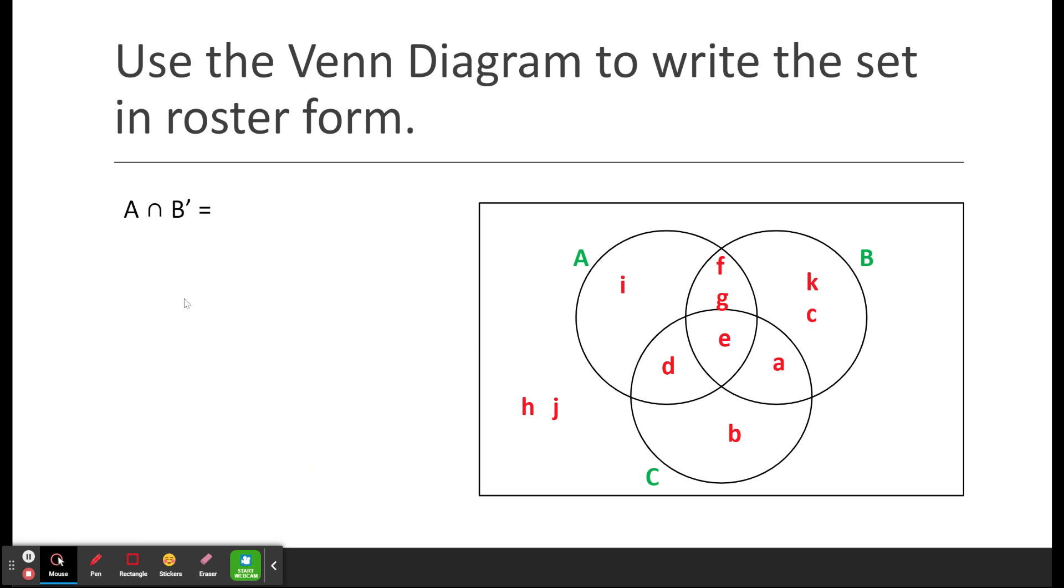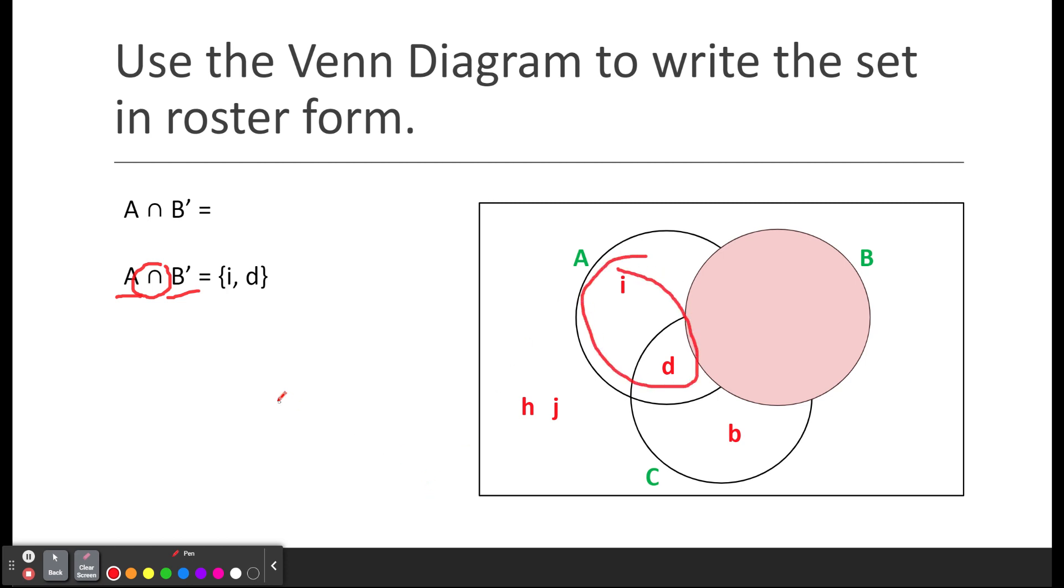Next. This is the intersection of A and the complement of B. So it cannot be part of what we have here in B. So things that are left, not counting the stuff that's in B. Well, that's going to be these two. It has to be part of A, and it has to intersect with the complement of B. So it cannot be anything from B. So what that means is it's only these two letters right here.